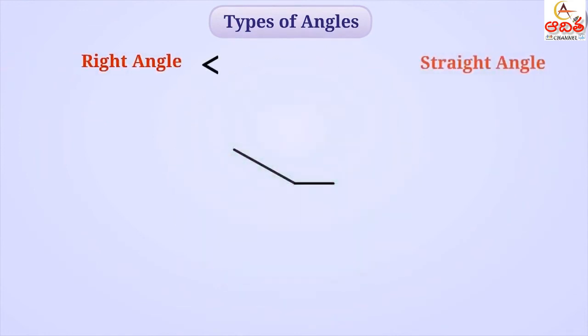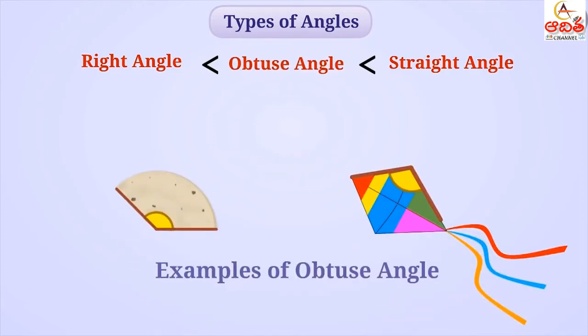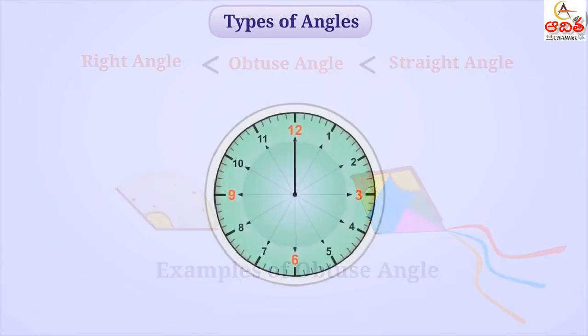Here, the hands of the clock are making an angle greater than a right angle but smaller than a straight angle. Such angles are called obtuse angles. Some examples of obtuse angles are as follows. Pause the video and give it a thought.